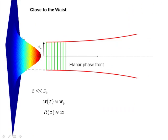There are three regions of interest we can describe with a Gaussian beam: two extremes of the formula and one middle point. One extreme is very close to the waist, where Z is much less than Z_nod. In this case, W of Z does not depend on Z — it's approximately equal to W naught. Close to the waist, the beam doesn't spread out; it goes perfectly straight. And R of Z, the radius of curvature, is equal to infinity because the waves close to the beam have planar phase fronts and act like confined plane waves.